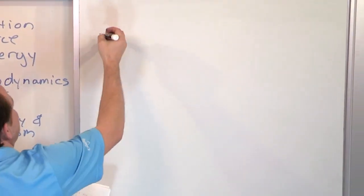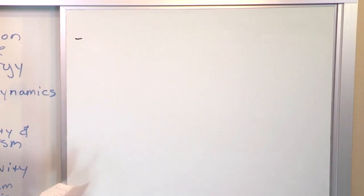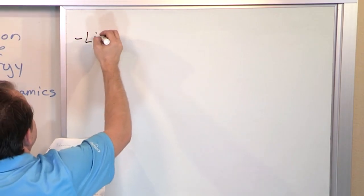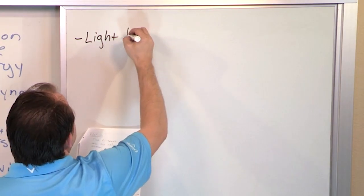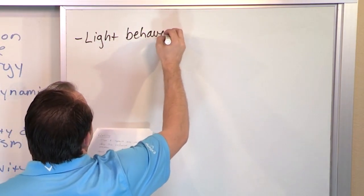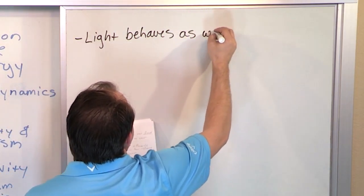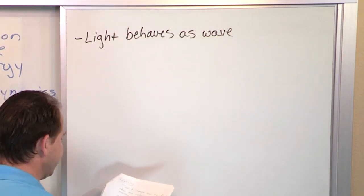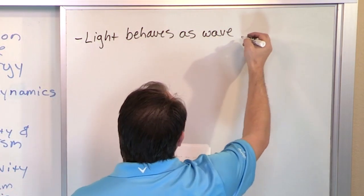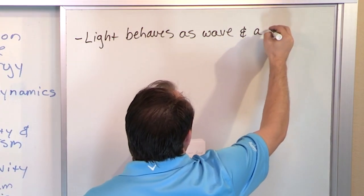So one thing we know, remember I told you light was an electromagnetic wave. Well, it turns out that light, when you actually do detailed experiments on it, it behaves as a wave in some experiments, like we talked about oscillating electromagnetic fields. And it also behaves as a particle.